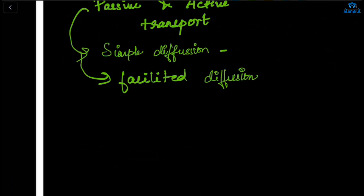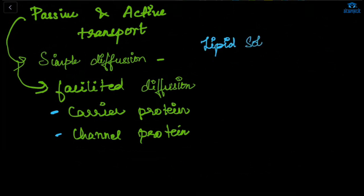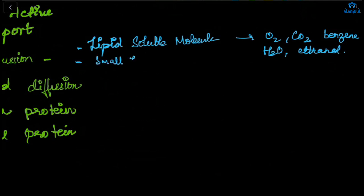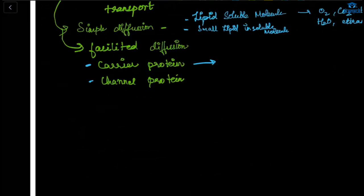Simple diffusion is simply the movement of any substance from high concentration to low concentration. In facilitated diffusion, there are two mediums by which molecules travel. One is carrier protein, the other one is known as channel protein. There will be transport of lipid soluble molecules like oxygen, carbon dioxide, benzene, water, and ethanol. And there will be also transport of small lipid insoluble molecules through the pores.